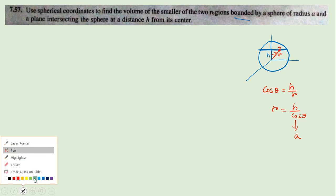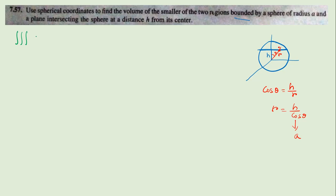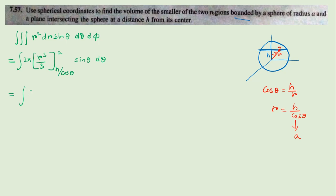The volume integral dV = R² dR sin θ dθ dφ in spherical polar coordinates. Integrating over R from h/cos θ to a gives [R³/3] = (a³ - h³/cos³θ)/3. Integrating over φ gives 2π. So the remaining integral is (2π/3) ∫(a³ - h³/cos³θ) sin θ dθ. This can be rewritten as (2π/3) ∫[a³ sin θ dθ - h³ sin θ/cos³θ dθ], where the second term is expressible as d(cos θ)/cos³θ.